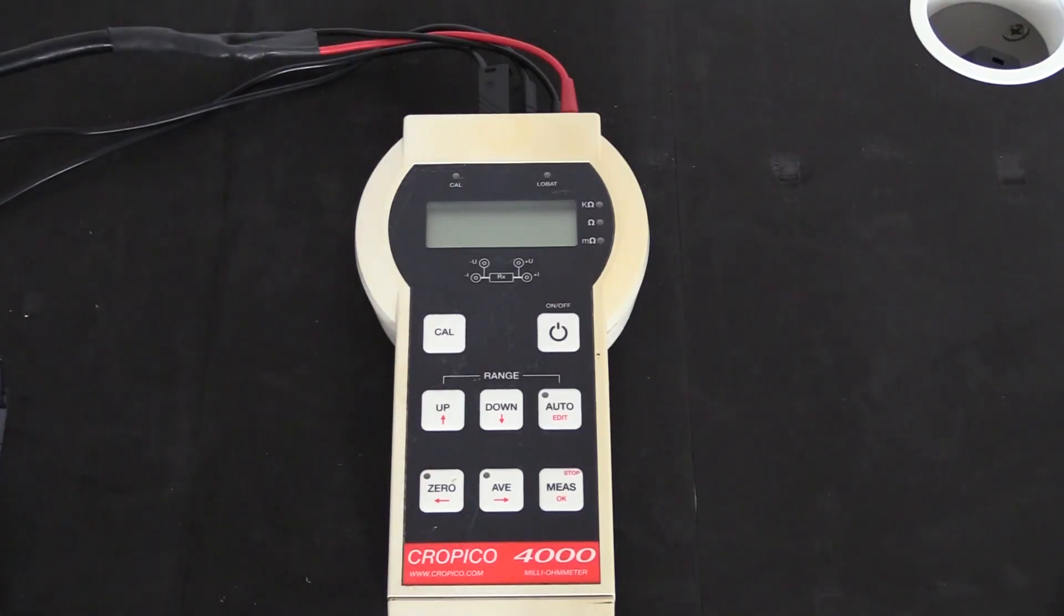We now have the DO4000 connected via the four wire channel to a test piece with a known reading. The DO4000 and the DO4001 have a maximum of 100 milliamp test current. But if you do need something slightly larger, the DO4002 does offer a 1 amp test current.